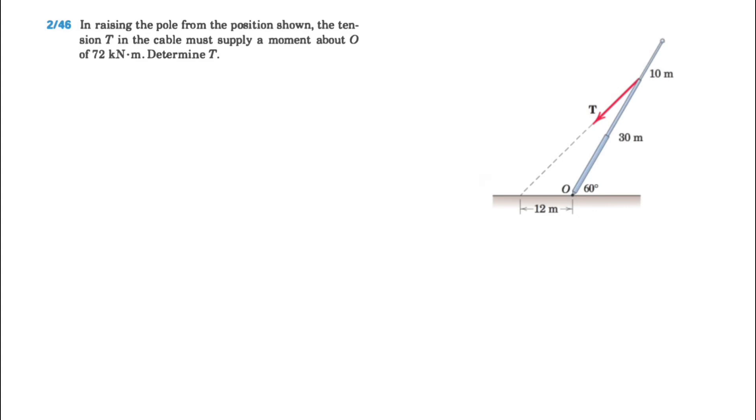Okay, welcome back guys. We're going to be solving another question from the second chapter of the Miriam textbook, question 46. In this question, in raising the pole from the position shown, the tension T in the cable must supply a moment about O of 72 kilonewton meter.